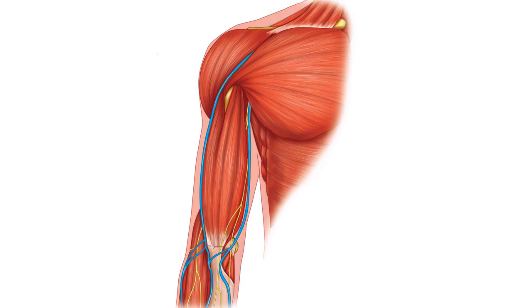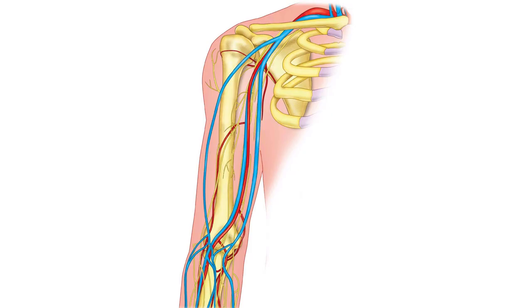Superficial veins can be seen along the surface of your arm, starting with the antecubital fossa, continuing up to the basilic and cephalic vessels, and down into the forearm. Deep veins are deeper structures such as the brachial vein, paired with the brachial artery.